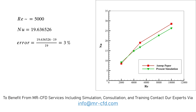Finally, for Reynolds number approximately equal to 5000, we have calculated the Nusselt number to be equal to 19.6365. If you calculate the error for this value, you can see that an error of 3% exists between our data and the data obtained by the paper.